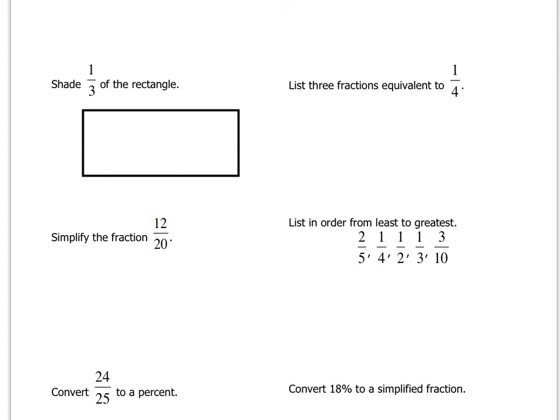Simplify the fraction 12 over 20. That's what we've been doing in class since Tuesday and Wednesday. We have to find a number that divides evenly into 12 that also divides evenly into 20. Find the biggest of those numbers, divide top and bottom by that number, keeping the value the same but changing the top and bottom numbers to something smaller and more manageable.